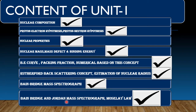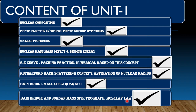Bainbridge mass spectrograph and Bainbridge and Jordan mass spectrograph — these two spectrographs are important. In the paper, a question will definitely appear on one of them — these are eight mark questions. I have prepared them properly through separate lectures. And we have covered the principle, definition, and advantage of these instruments. Then there is Moseley's law, which can appear as a direct question, a numerical to find frequency, or an X-ray spectra question.